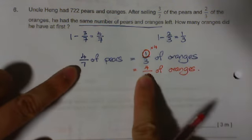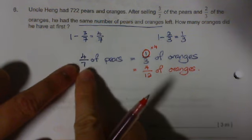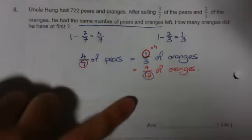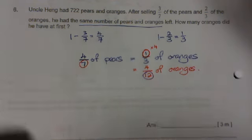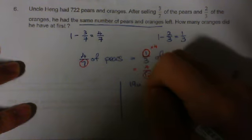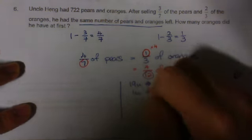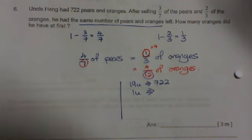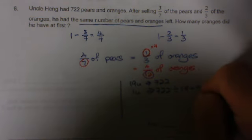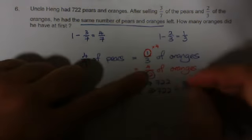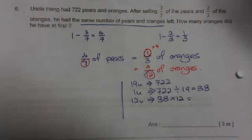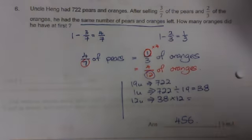So, 4, 4, numerator has become the same. I know 7 units for pears total. And for oranges, the total number of units is 12. So, total, I have 19 units. Let me finish this up. I'll show the model. So, 19U is 722. 1U is 722 divided by 19 equals 38. So, how many oranges did he have at first? Looking at the oranges, it's 12U. 38 times 12 equals 456.